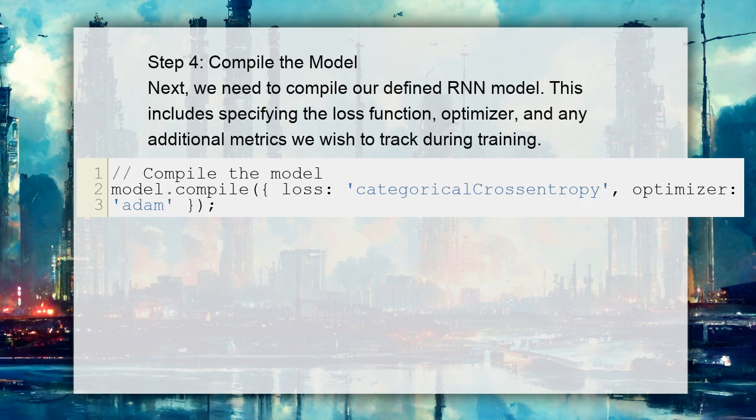Step 4: Compile the model. We need to compile our defined RNN model. This includes specifying the loss function, optimizer, and any additional metrics we wish to track during training.